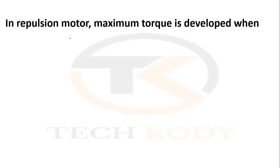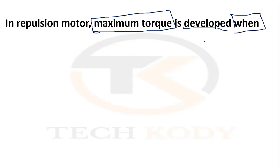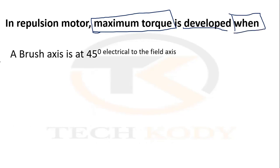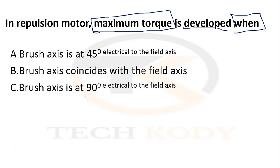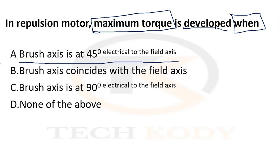In a repulsion motor, maximum torque is developed when the brush axis is at 45 degrees electrically to the field axis. The options include: brush axis coincident with field axis, brush axis at 90 degrees to field axis, and none of the above. The correct answer is 45 degrees electrically to the field axis — only at that condition is maximum torque obtained.